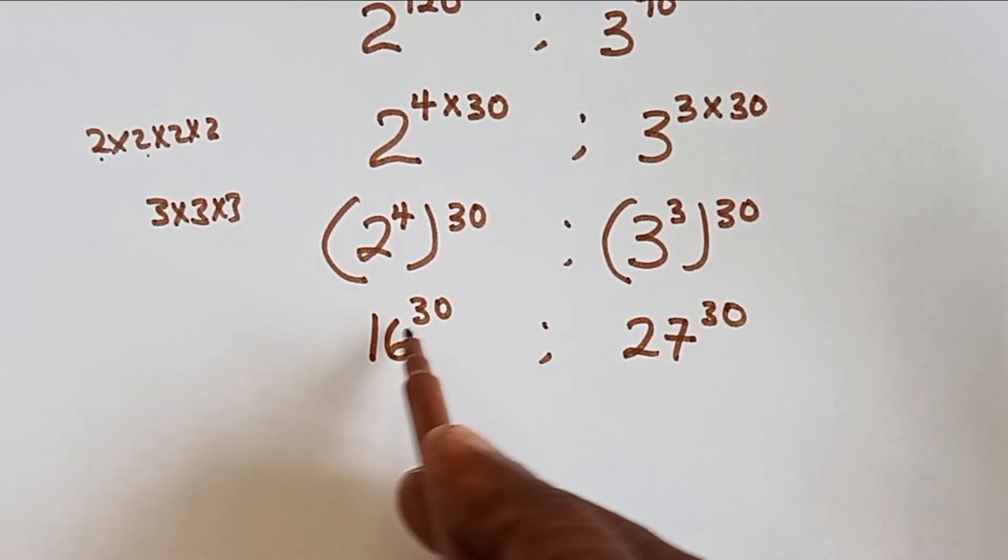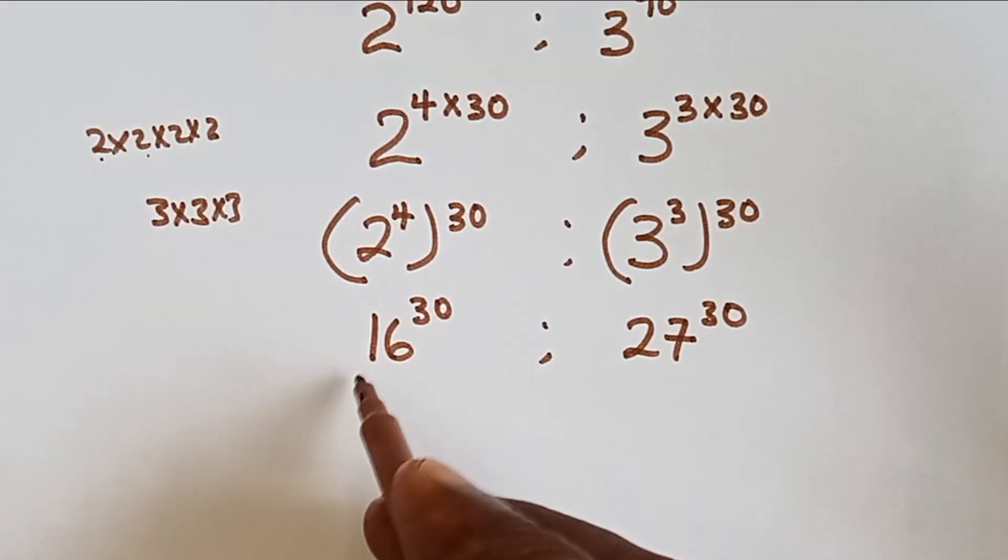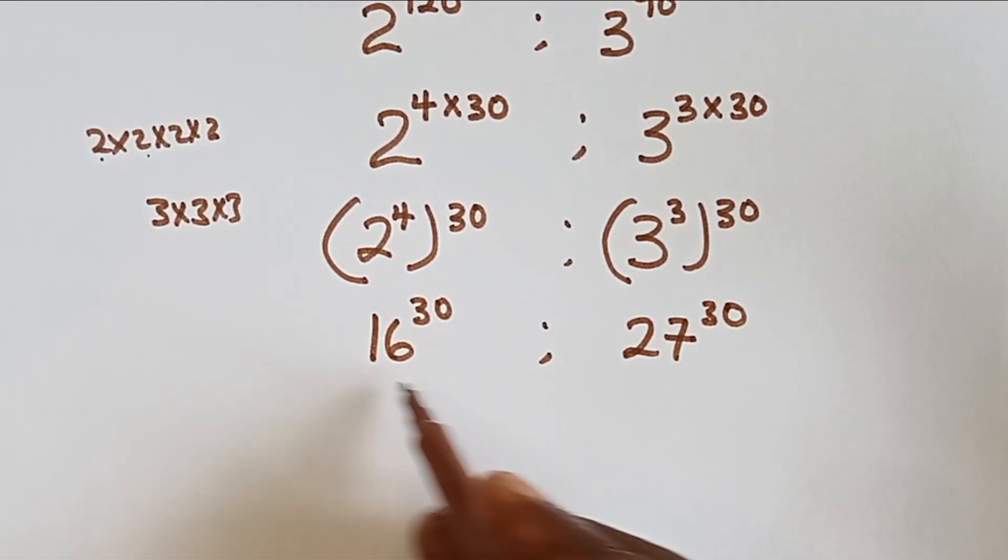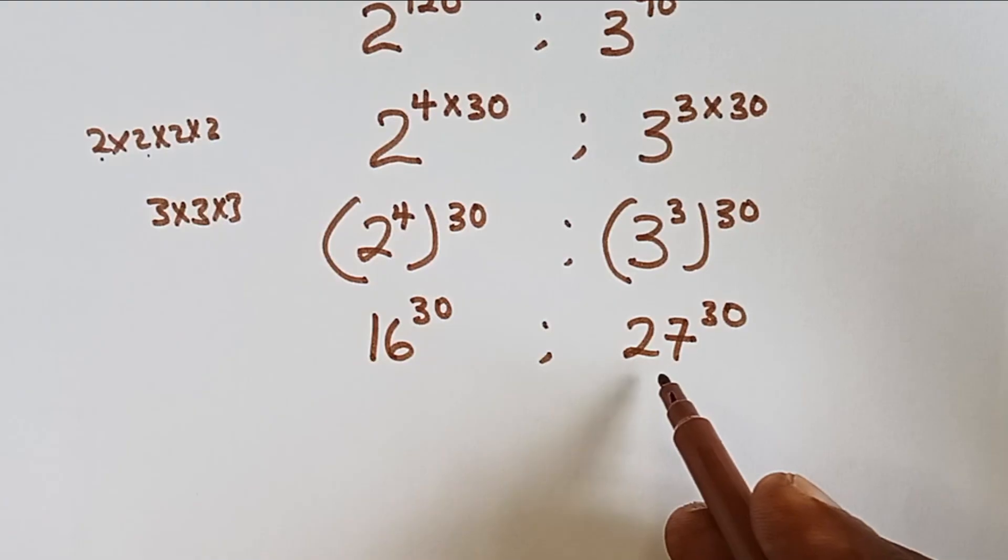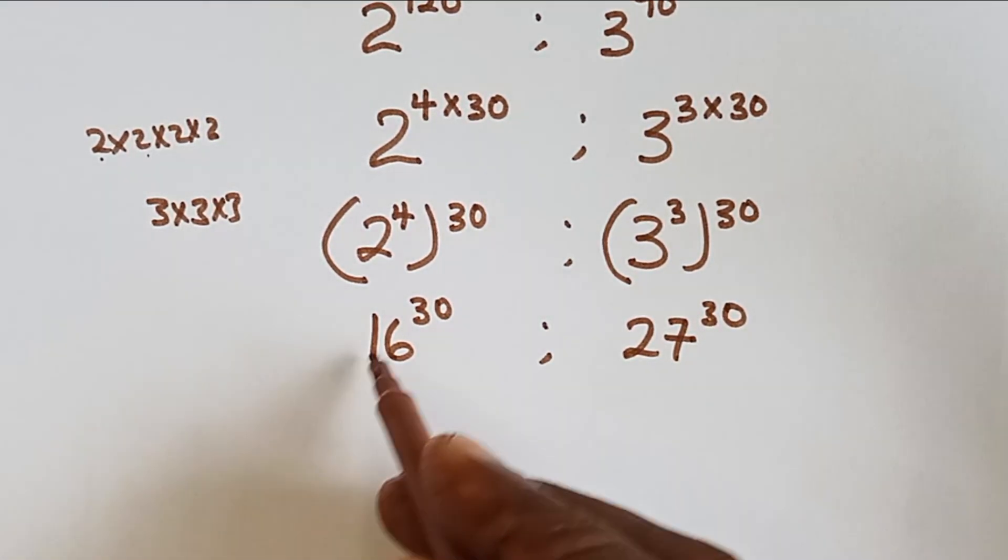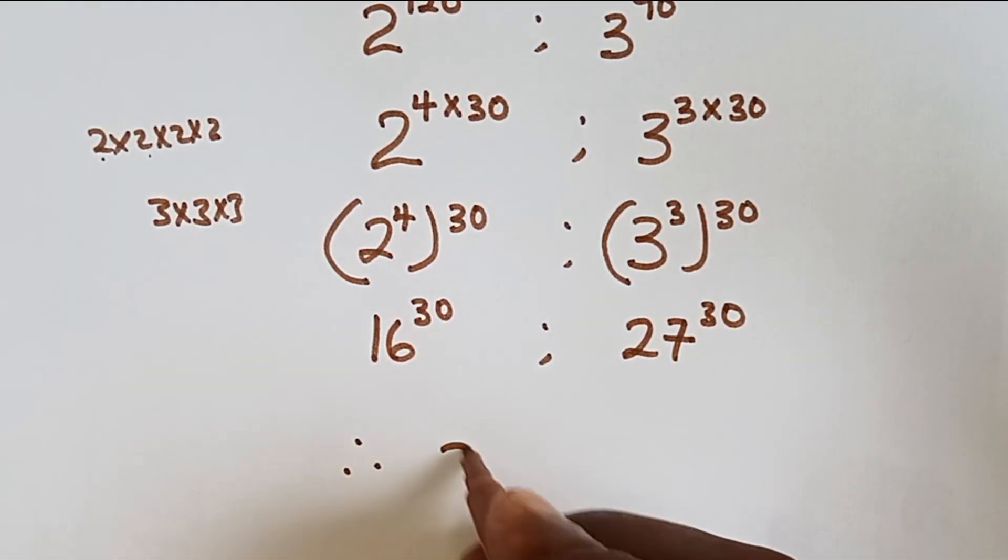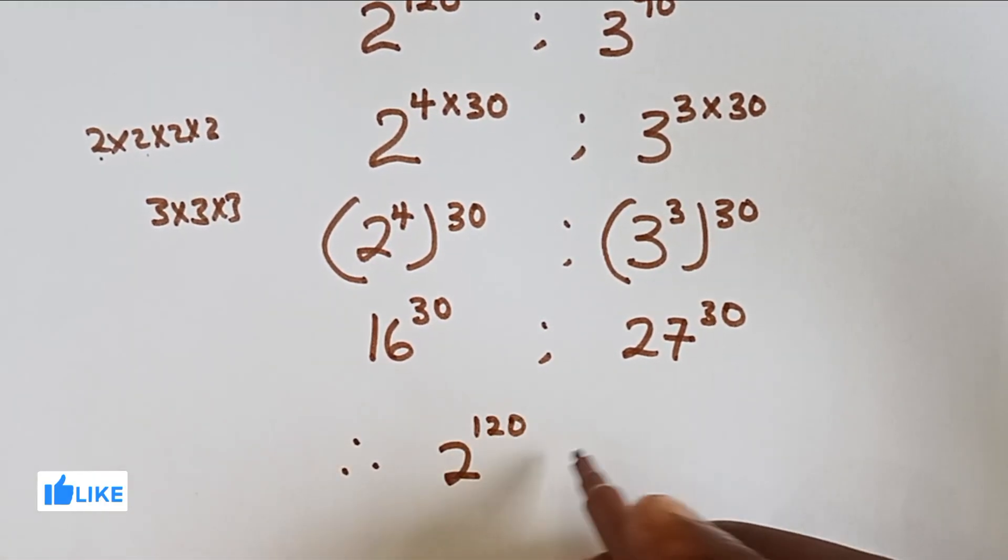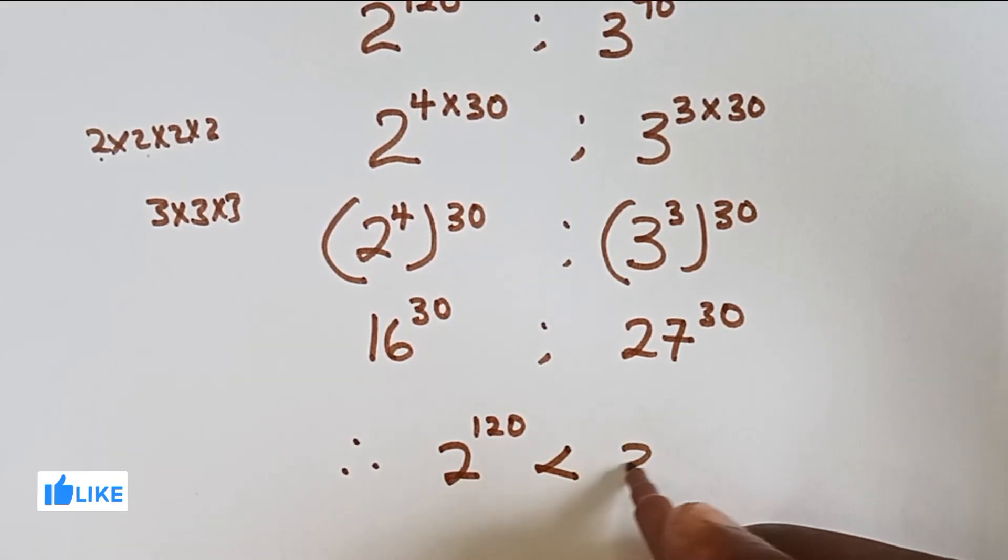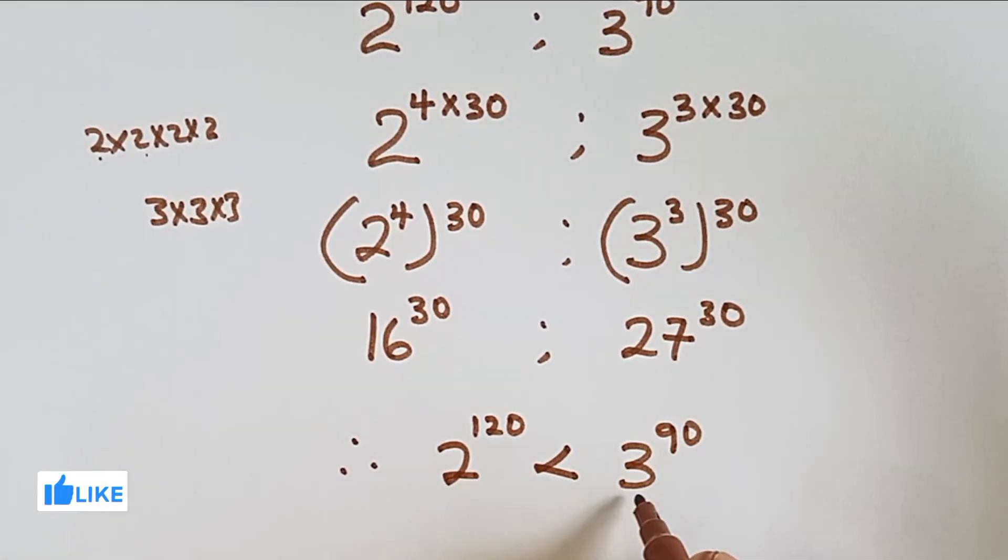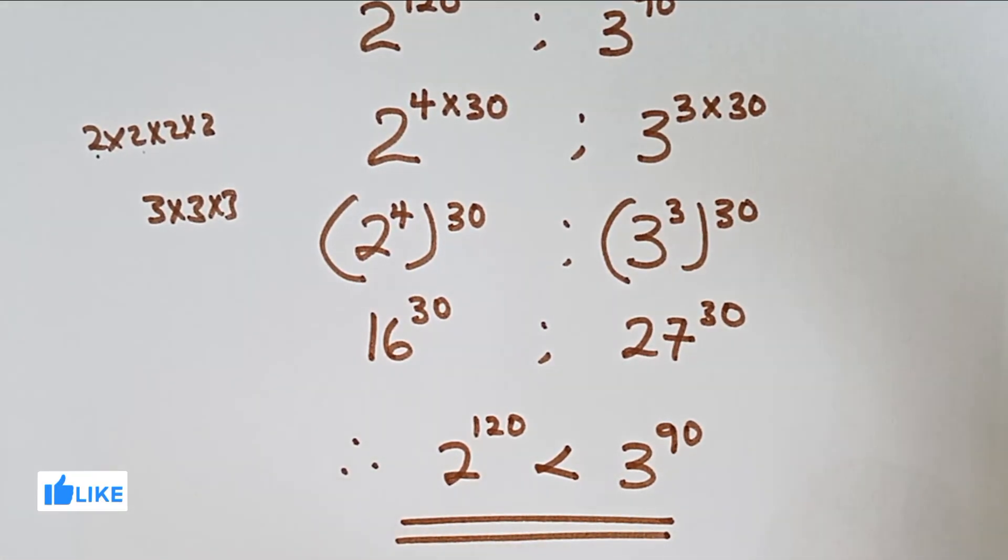You can see they have the same power now and from their basis, we can compare their basis. We have 16 and here we have 27. That means that 27 raised power 30 is more than 16 raised power 30 and therefore 2 raised power 120 is less than 3 raised power 90 because 3 raised power 90 is higher. This is the final answer.